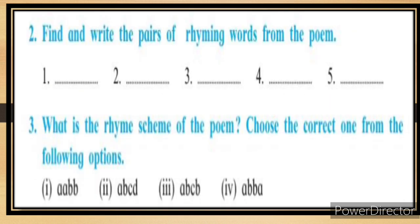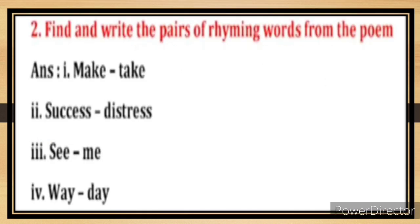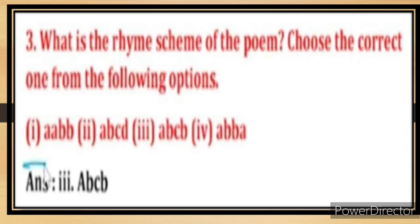Find and write the pairs of rhyming words from the poem and identify the rhyme scheme. Rhyming pairs: make/take, success/distress, see/me, way/day. The rhyme scheme of the poem is A B C B.